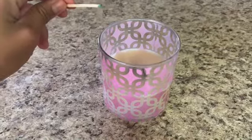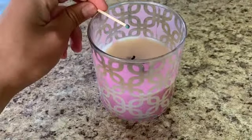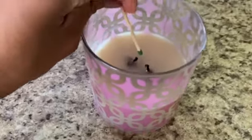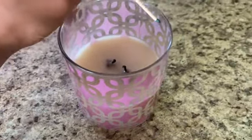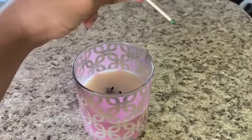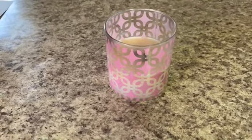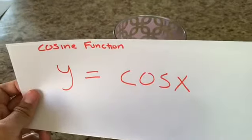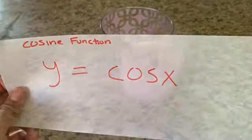We start at our max, we cross, we hit our minimum, we cross, we hit our maximum. The function we'll be using to solve this cosine function is y equals cosine x.